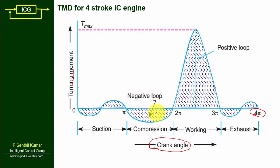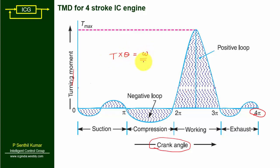We get maximum positive energy only during the working stroke, whereas during the suction, compression, and exhaust strokes, the energy is very minimal compared to the working stroke — we can consider this as negligible. The dotted lines in the turning moment diagram represent the area of the diagram. This area represents the work done by the IC engine, because torque (y-axis) multiplied by θ (x-axis) gives work done.